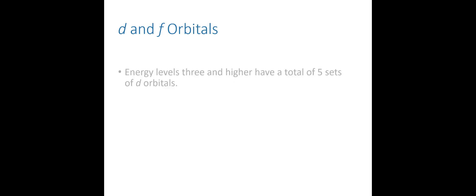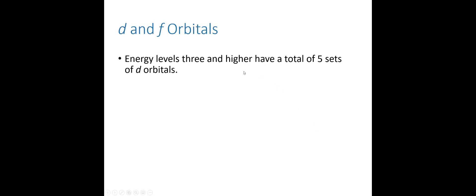If you thought P was complicated, wait until you see D and F. The great thing is we don't really need to know much about them other than some numbers. We don't start getting P orbitals until the second shell, and we don't start getting D orbitals until the third shell — energy levels three and higher. D orbitals come in sets of five instead of three, so five orbitals times two electrons per orbital equals 10 electrons that can be held in a D sub-shell.